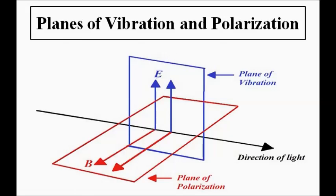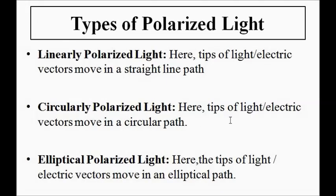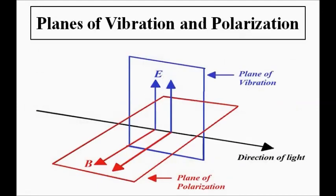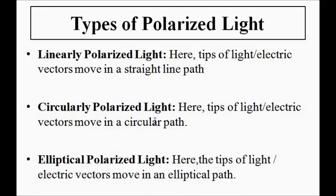Depending on the ways polarization is achieved, there are different types of polarized light. There are three main types: in linearly polarized light, the tips of the electric vectors move in a straight, rectilinear path; in circularly polarized light, the tips move in a circular path; and in elliptically polarized light, the tips move in an elliptical path.